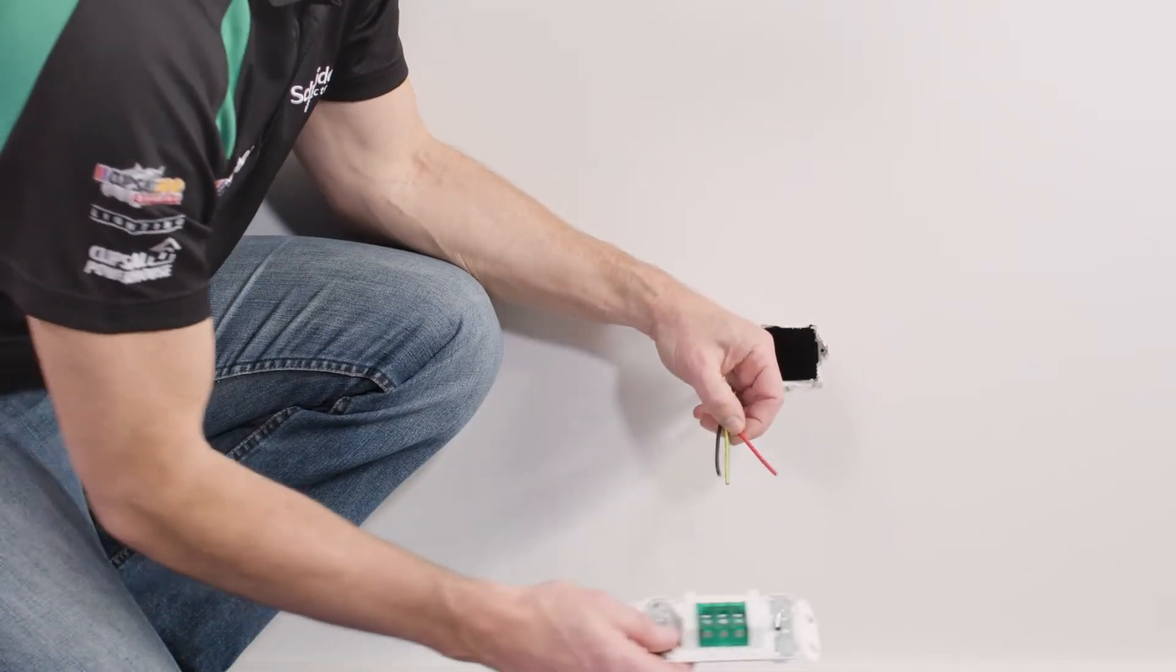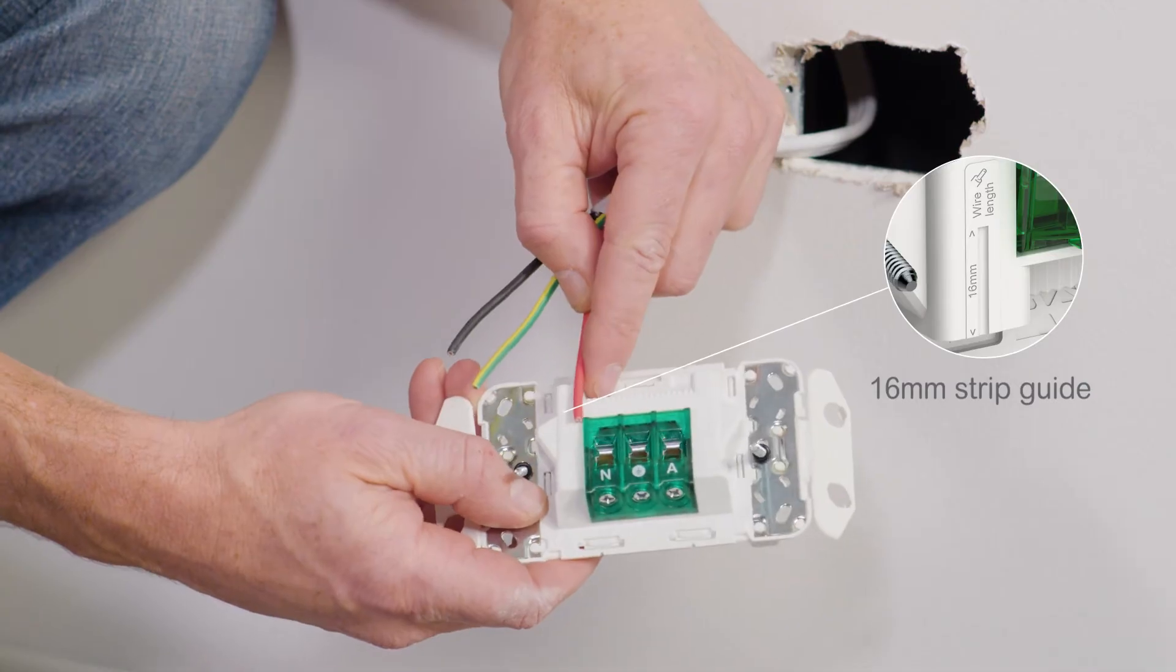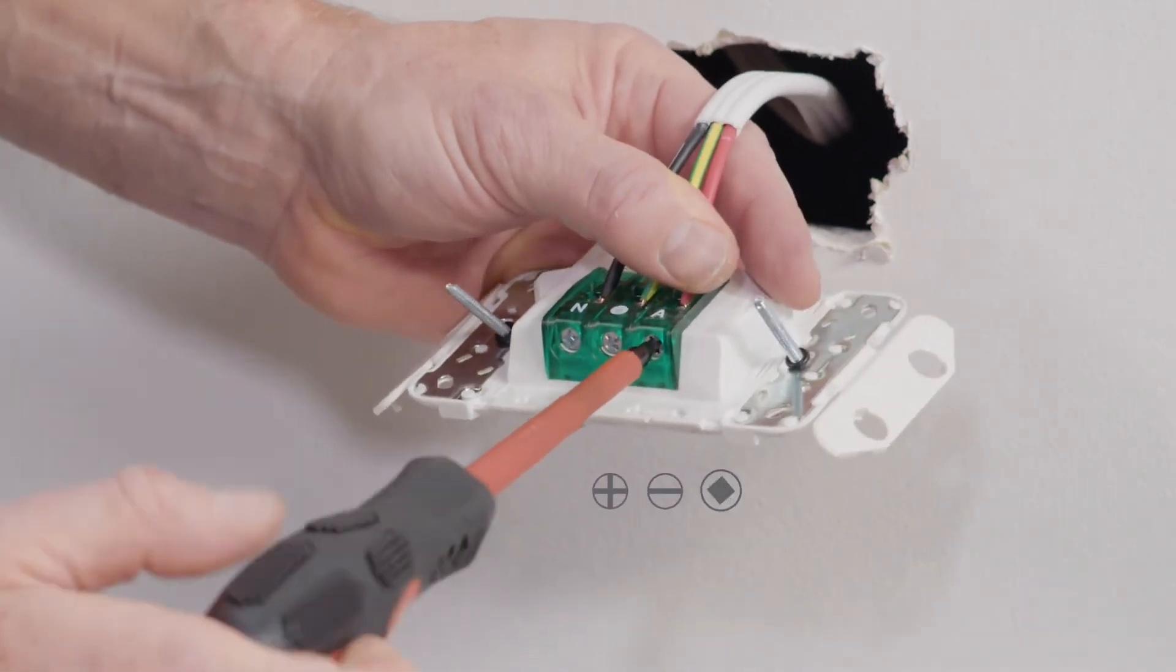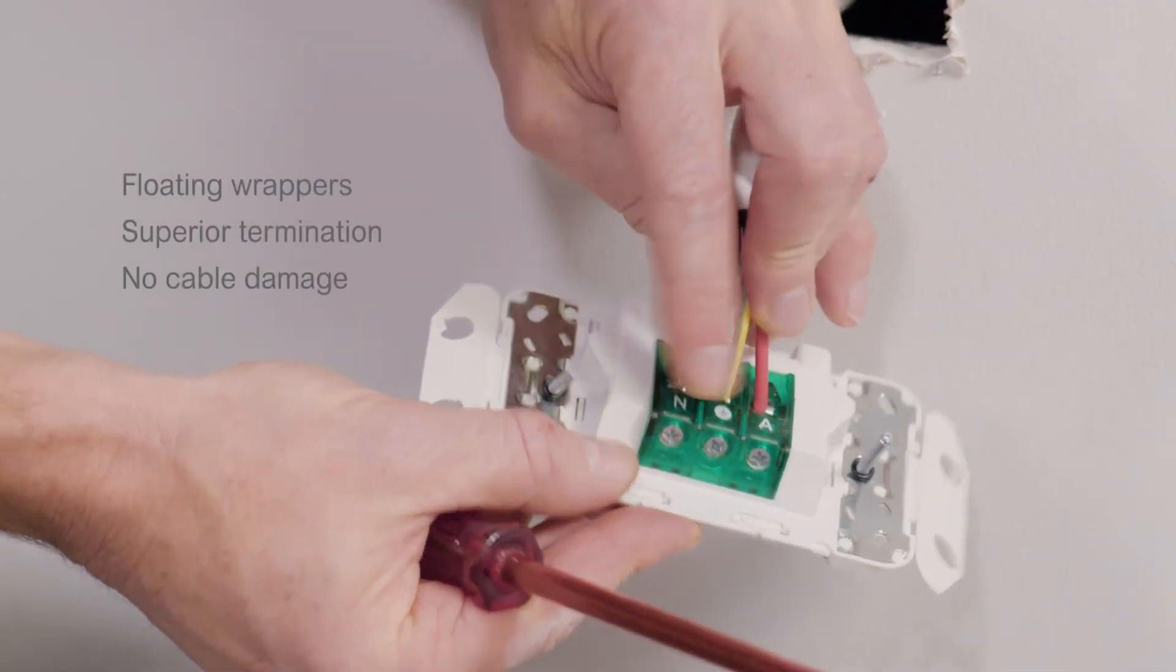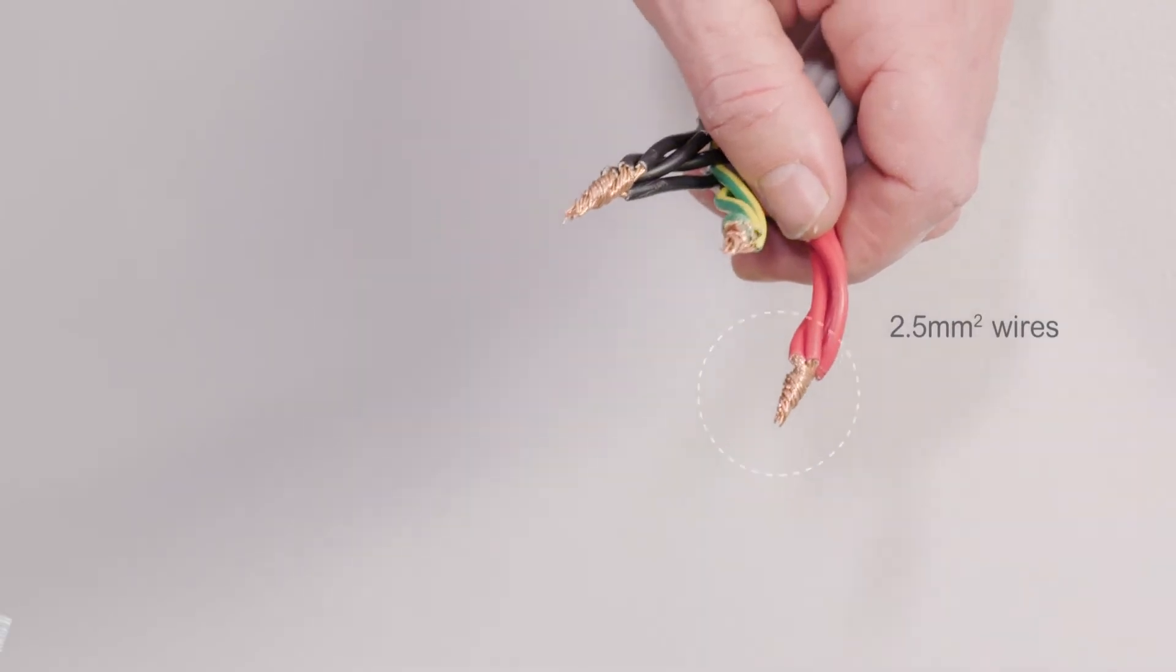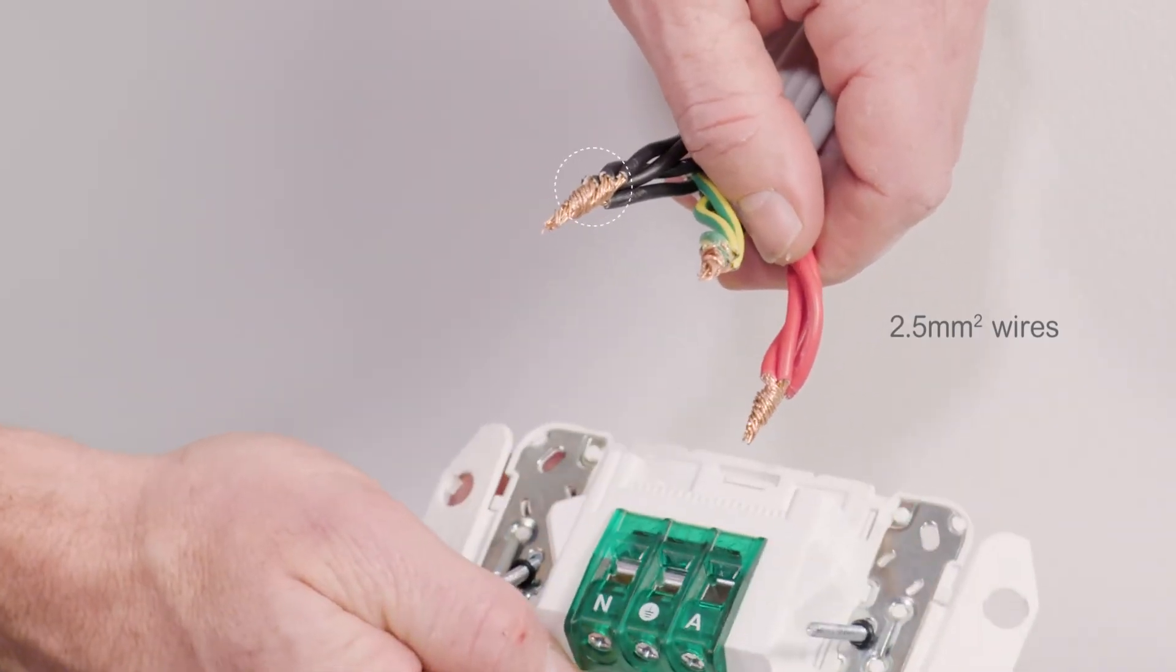Fitting off sockets is simple. Just check your strip length, and use a Phillips, flathead, or square drive. You can even use a battery drill. Floating wrappers offer superior termination, and the terminals take up to four 2.5mm wires.